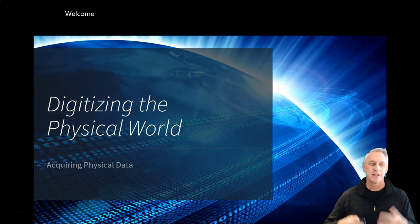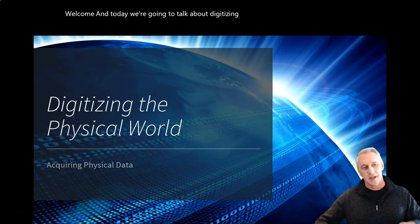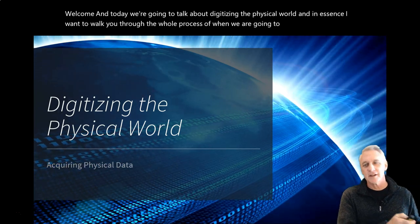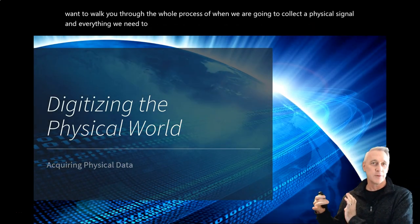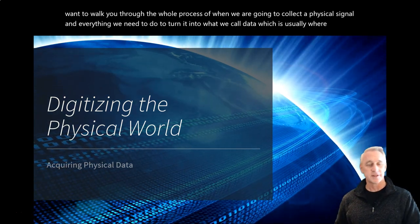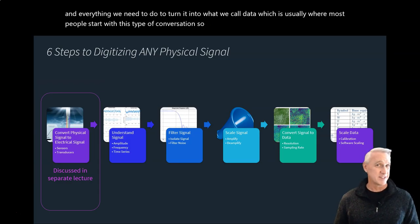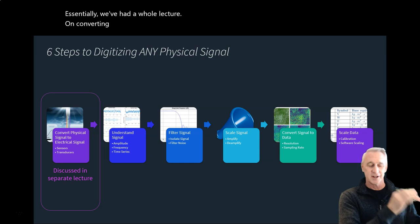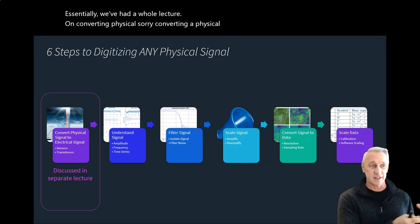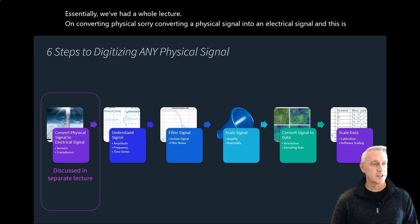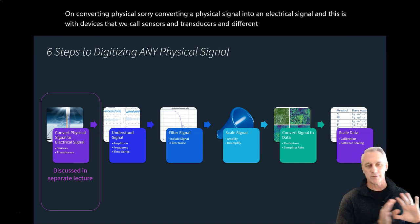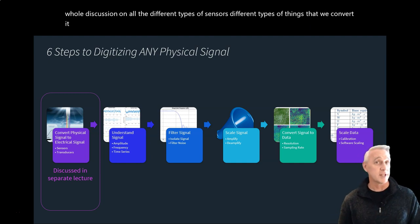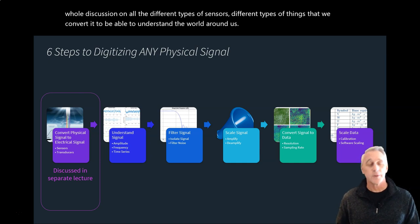Welcome, and today we're going to talk about digitizing the physical world. I want to walk you through the whole process of when we collect a physical signal and everything we need to do to turn it into what we call data, which is usually where most people start with this type of conversation. We can break it down into six steps.